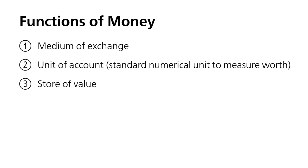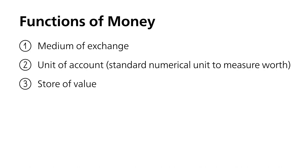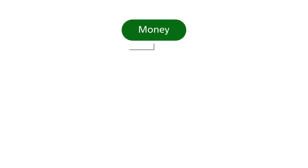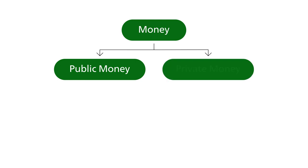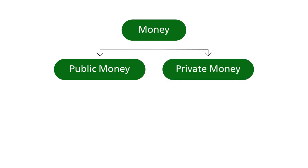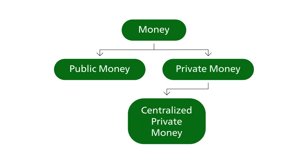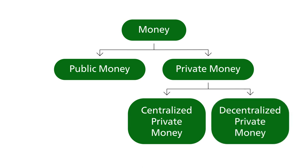Anything that can fulfill these three functions well can be used as money. For the purpose of this video, we will differentiate between public money and private money, and further between centralized private money and decentralized private money. Public money is the money that is issued by the central bank.